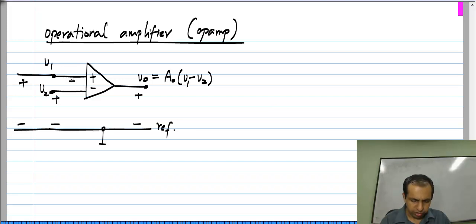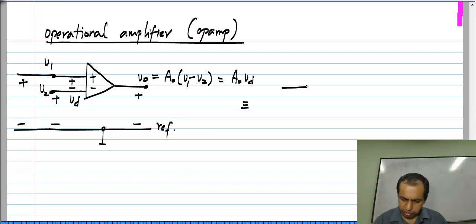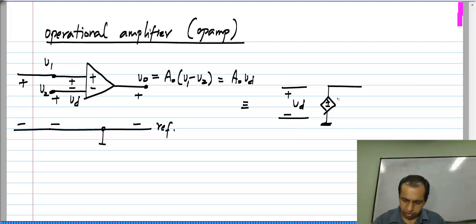Typically this difference between V1 and V2 is denoted Vd, so V-naught is dependent only on the difference voltage between its inputs. Looking at this definition, it will be obvious to many of you that this is nothing but a voltage-controlled voltage source. The voltage-controlled voltage source is such that the controlling voltage between its terminals is denoted Vd and the controlled source is A-naught times Vd.